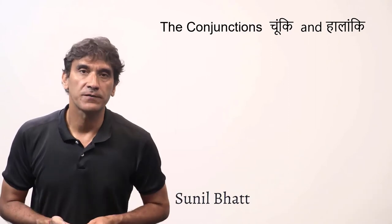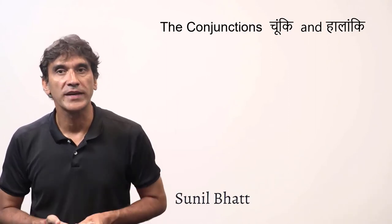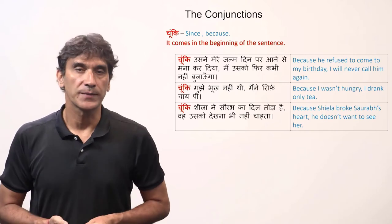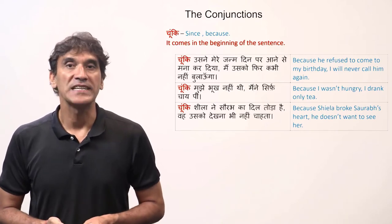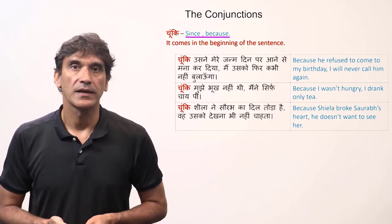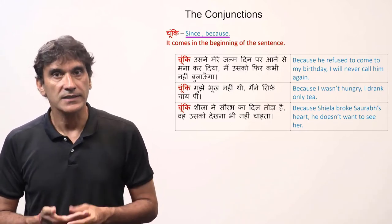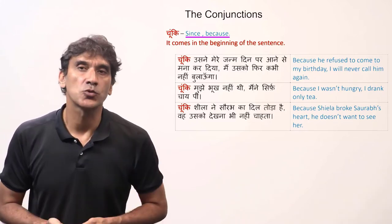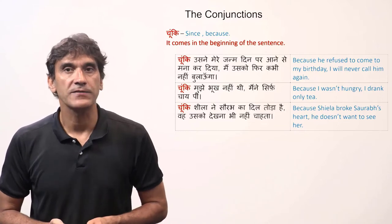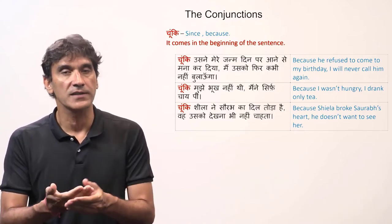The final grammar point of this course is the conjunctions 'choonki' and 'halanki'. First, let's take 'choonki' — it means 'because', 'since', or 'as', and it comes at the beginning of a sentence. Sentences with 'choonki' always have two clauses: the first clause contains the conjunction 'choonki' and gives the reason.